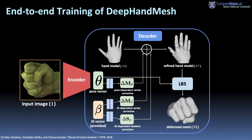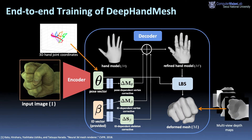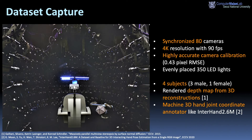Our deep-hand mesh is trained end-to-end using 3D joint coordinates and multi-view depth maps, along with penetration avoidance loss and Laplacian loss. We constructed a multi-view studio for data capture with 80 synchronized cameras at 4K resolution and 90 frames per second. We captured 4 subjects and rendered depth maps from 3D reconstruction. A manual 3D hand joint coordinate annotator like InterHAND 2.6M is used.